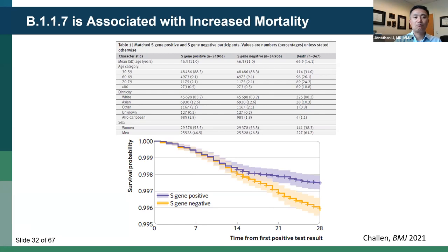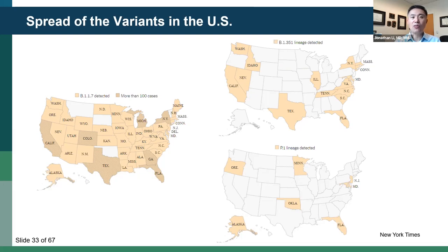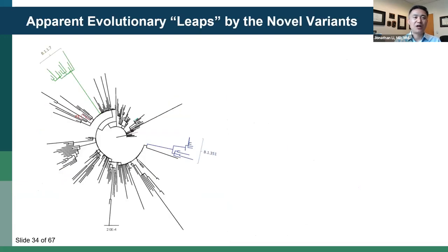What's going on in the US right now: B117 is now detectable in pretty much every single state, including more than 100 cases in many states. The B1351 and P1 variants are also, a little more slowly, spreading in the US as well. So where could these variants have come from?